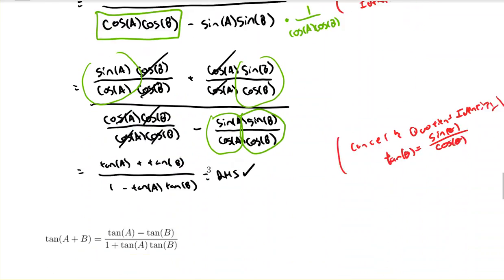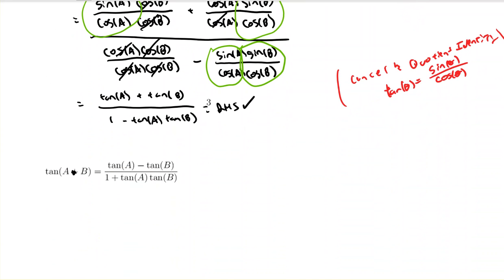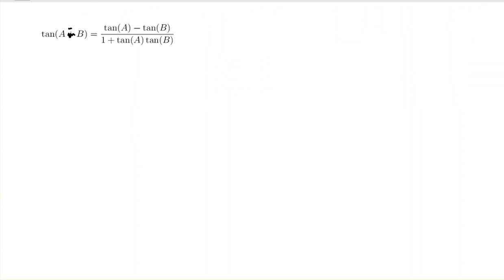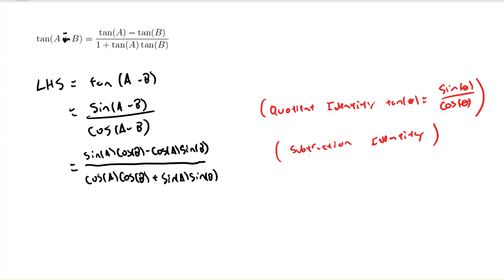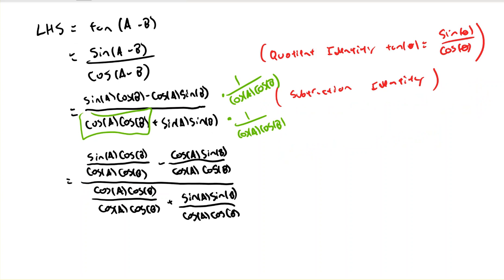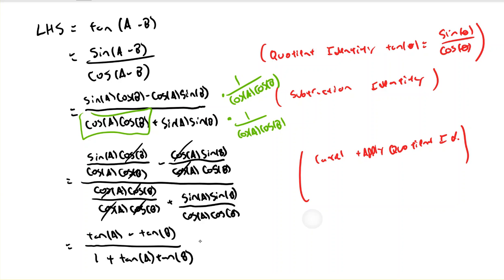For the subtraction formula for tangent, the process is similar — there should be a minus sign there. I start with the left-hand side, apply the quotient identity, then the subtraction formula for sine and cosine. Using the same clever trick, I multiply the numerator and denominator by one divided by cosine A times cosine B, then cancel and apply quotient identities to obtain the right-hand side, which is the tangent subtraction identity.